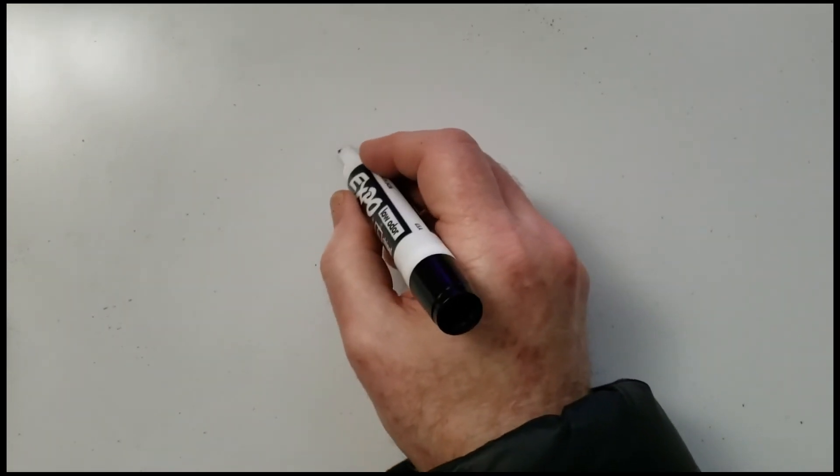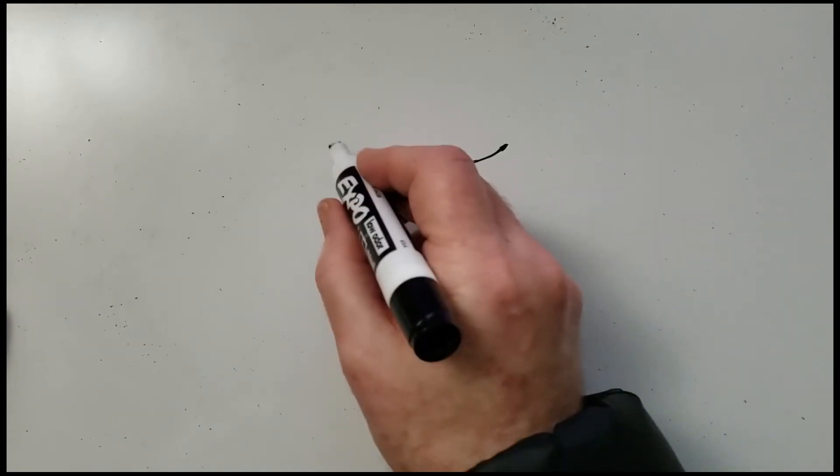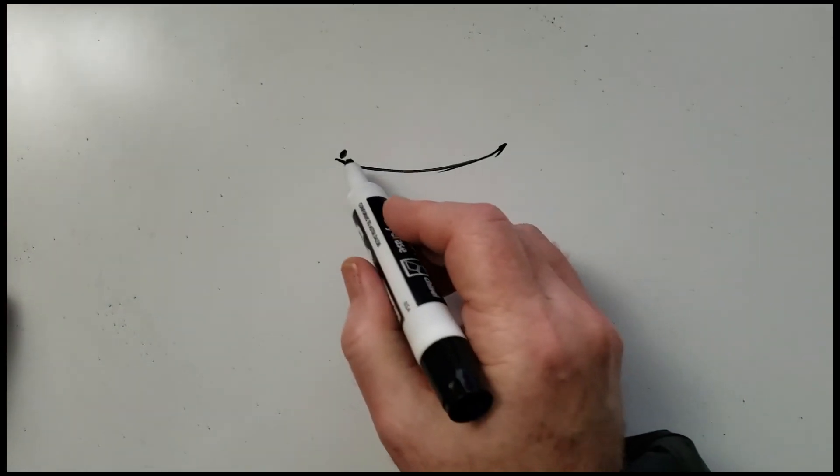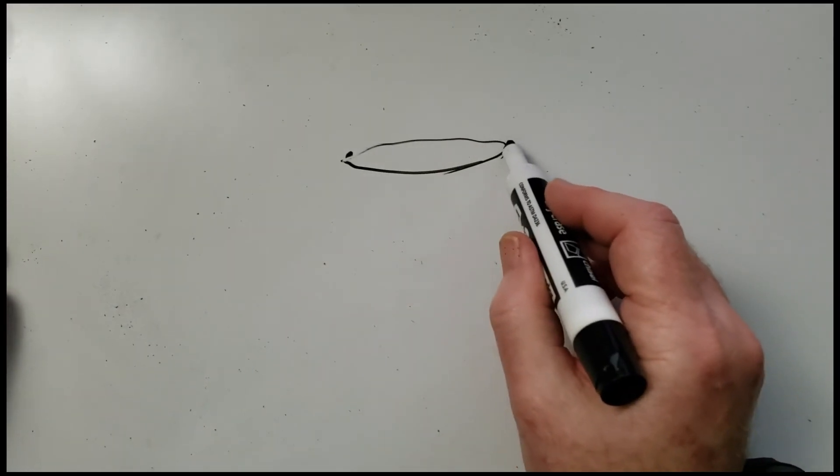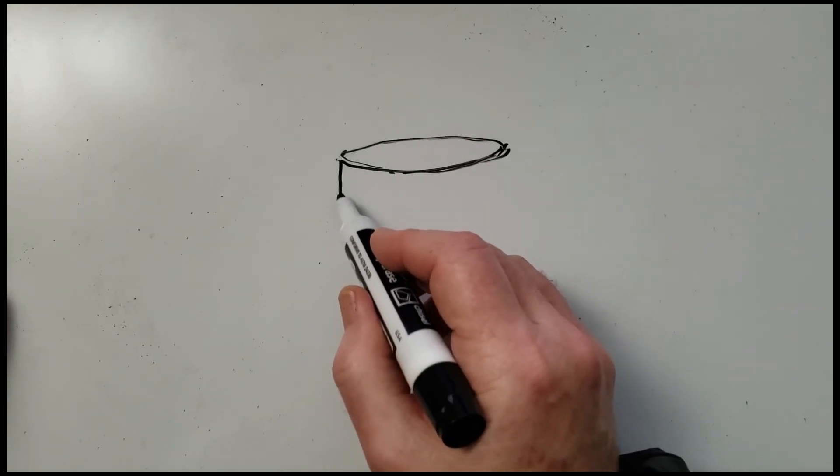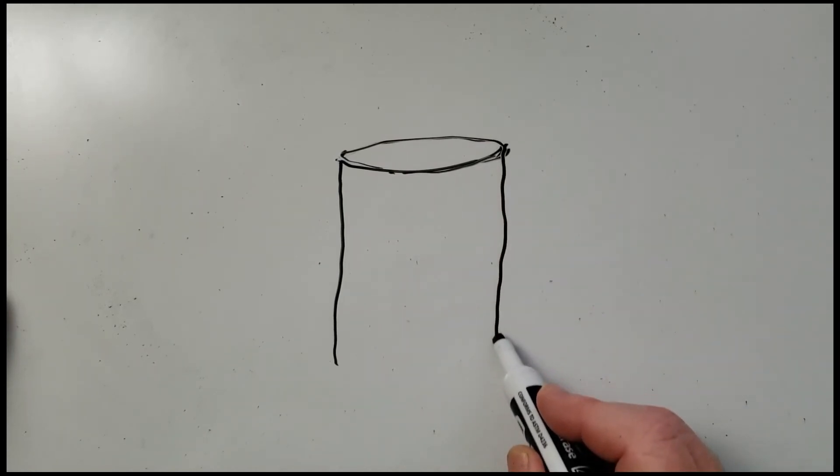And we can draw one of these simple candles. So once again, we start with a foreshortened circle on top. Draw that with a smile. Now what you can do is turn the paper upside down to do the top part. When you do, it's easier to move your hand exactly the same way to get the same curve.